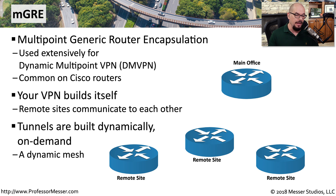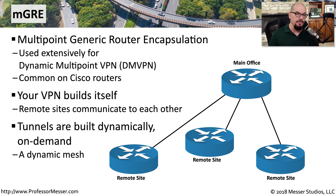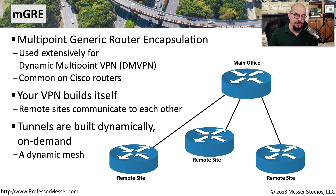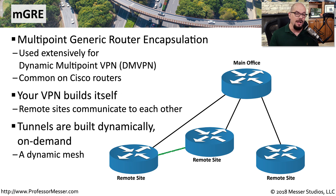Normally you would have a main office with remote sites connecting to it over single links. If you needed to communicate between remote sites, that remote site would first communicate to the main office, and then the main office would communicate to the destination site. With a dynamic multipoint VPN, two sites can recognize they want to communicate, create their own link, and when that link is no longer needed, it's disconnected. This means you have a more efficient network — you only use connectivity when needed, and you can send data directly between two remote sites rather than hopping through a main office.